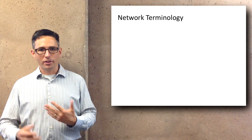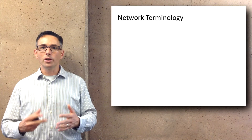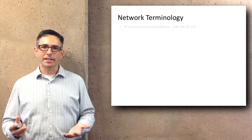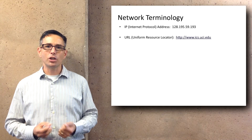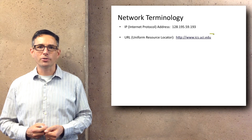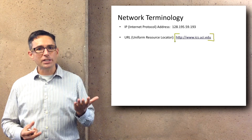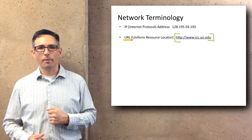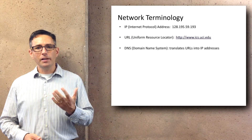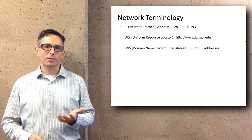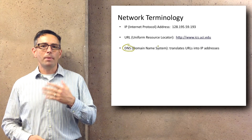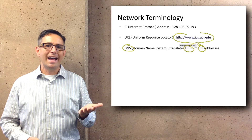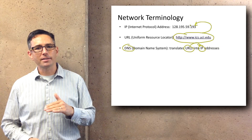Network terminology has its own set of terms. You're familiar with using web browsers and typing in addresses into the top of the browser. The technical term for what you're typing in is a URL — Uniform Resource Locator. For example, http://www.ics.uci.edu is a URL for the informatics department at the University of California, Irvine. There's something called the domain name system, which is responsible for translating those human-understandable URLs into something called an IP address.